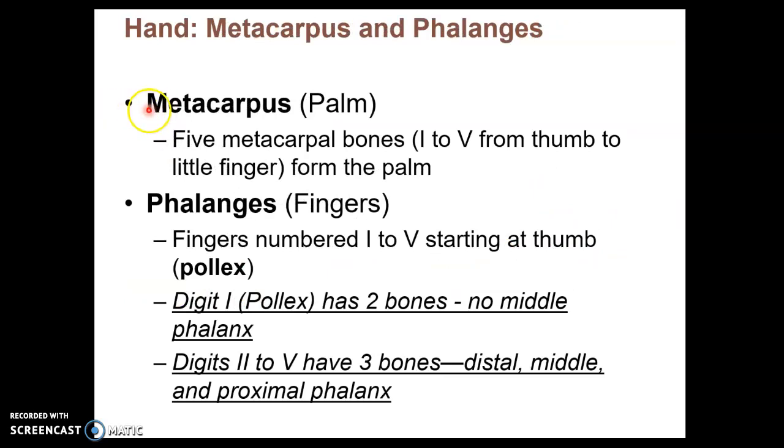But moving distally, then we run into the metacarpal bones, or metacarpus. These are five bones deep to your palm, numbered one to five from the thumb side using Roman numerals.